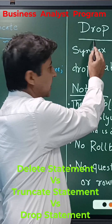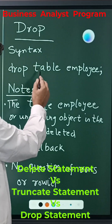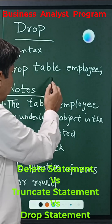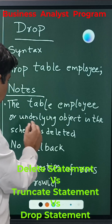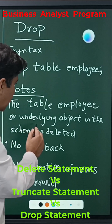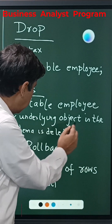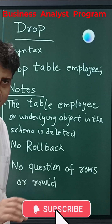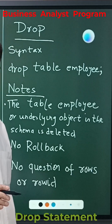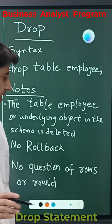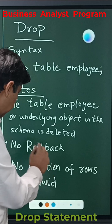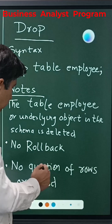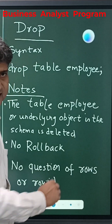Now we move on to the drop statement. The syntax is: DROP TABLE table_name — for example, DROP TABLE employee. The table employee and the underlying object in the schema are deleted entirely. There is no question of rows or data; the whole table is dropped from the database or schema. No rollback is possible, and since the object itself is no longer available, there is no question of rows or row ID.